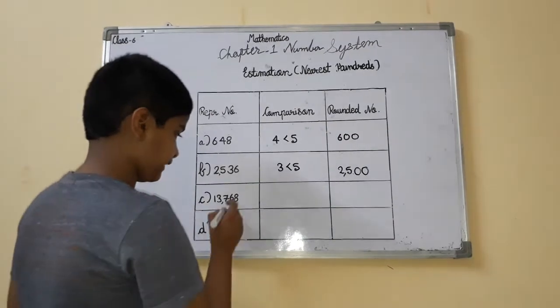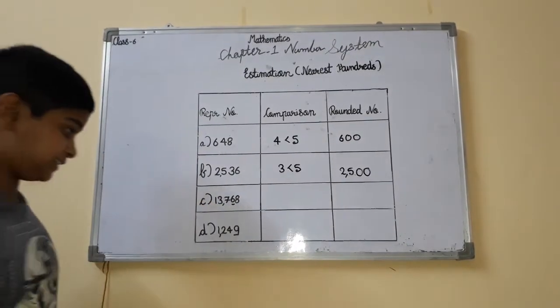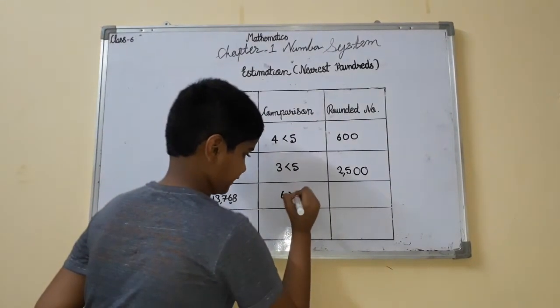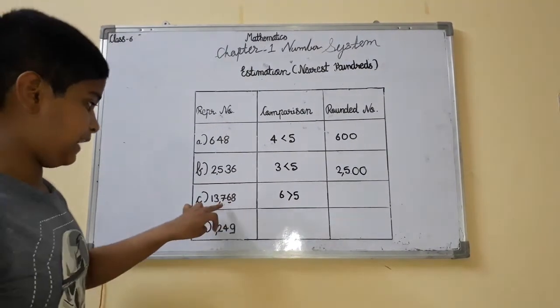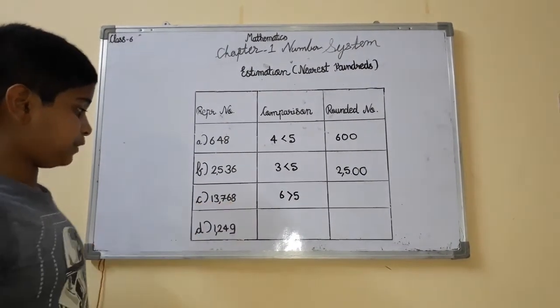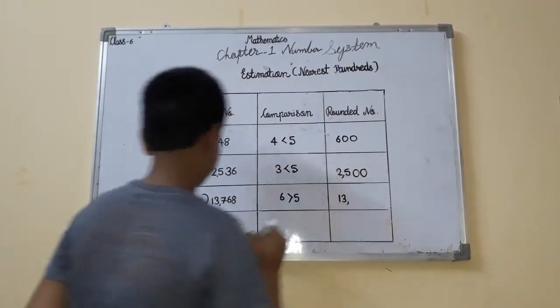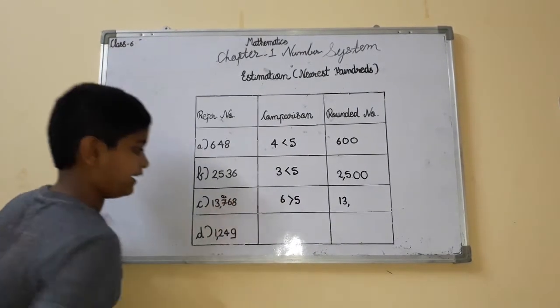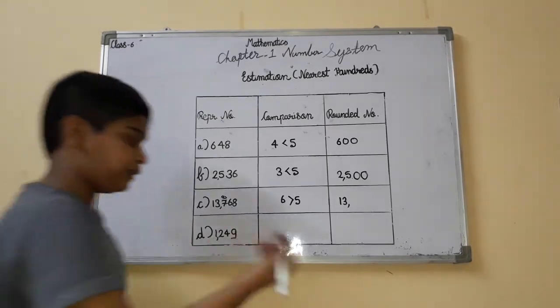Now let's look at the next number. We will check its tens place, which is 6. So 6 is greater than 5. As 6 is greater than 5, now what will happen here? It will convert to 0, but here it will add.